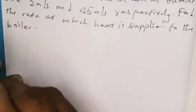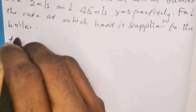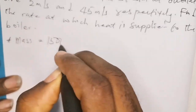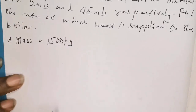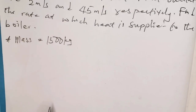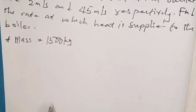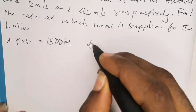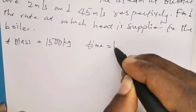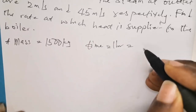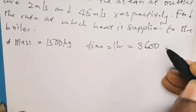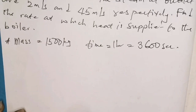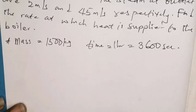From the question we are given mass equal to 1,500 kilograms of steam to be produced per hour, so we are also given time. Time equals 1 hour, and 1 hour is equivalent to 3,600 seconds. With an enthalpy of 3,077 kilojoules per kilogram.